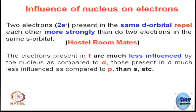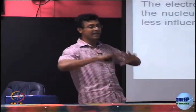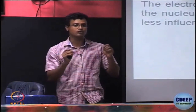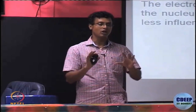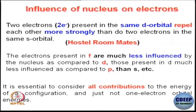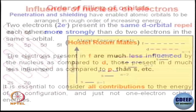Electrons present in f orbitals are obviously much less influenced by the nucleus compared to d. So electrons in the s orbital are most involved with the nucleus; p orbital electrons are a little less involved; d orbital electrons are less involved still; and f electrons are the least involved with the nucleus. Therefore, the repulsion among f electrons will be much greater compared to any two electrons in any other orbitals. When calculating any effect by these different electrons, you have to think of the bigger picture — how much penetration there is, how much repulsion they will have with each other.